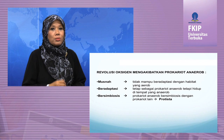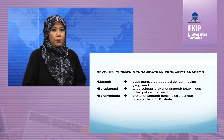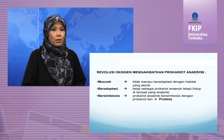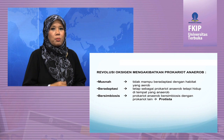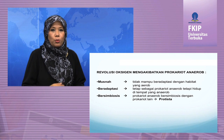Bagaimanakah asal mula munculnya protista? Pertama, revolusi oksigen dianggap merupakan awal perubahan kehidupan di bumi karena mengakibatkan tiga hal pokok bagi prokaryot anaerob. Pertama, prokaryot anaerob menjadi musnah karena tidak mampu beradaptasi dengan habitat yang aerob. Kedua, prokaryot anaerob beradaptasi dan tetap sebagai prokaryot anaerob, tetapi hidup di tempat yang anaerob seperti di lumpur, bersembunyi di lubang yang dalam, dan lain-lain.